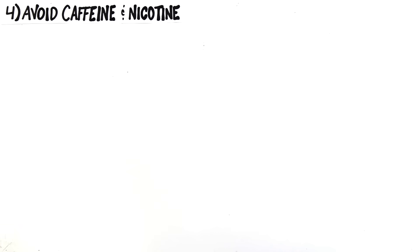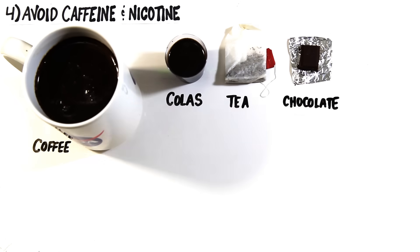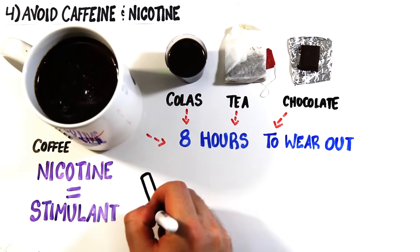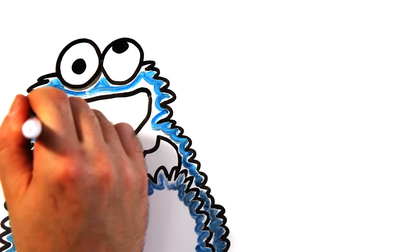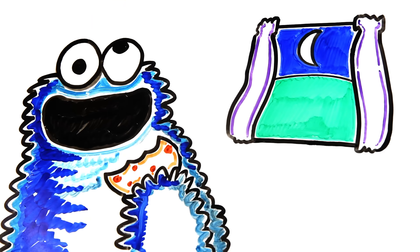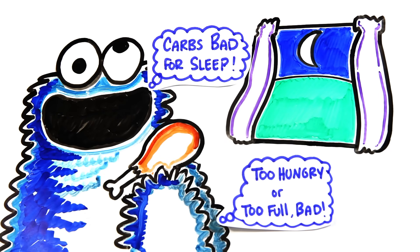Four, you should minimize or avoid caffeine and nicotine. Coffee, colas, some tea, and even chocolate can take as long as eight hours to wear out fully, and nicotine is a stimulant, so avoid them too late in the day. It's also worth avoiding eating too close to bed. While some studies show avoiding diets that are excessively biased towards carbs will help, it's better to just avoid being too hungry or too full before bed.